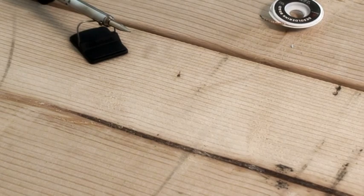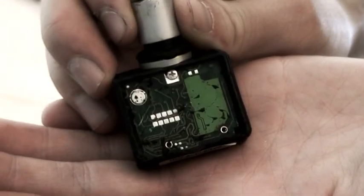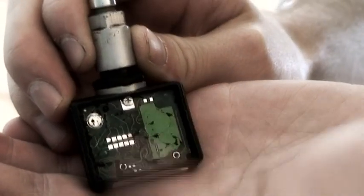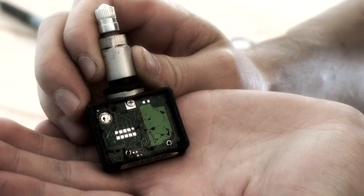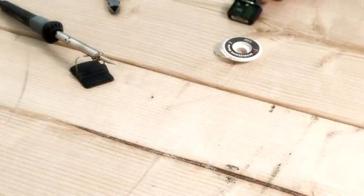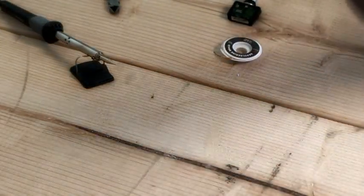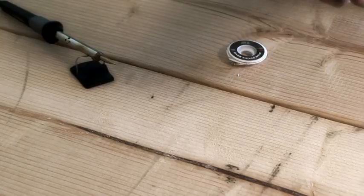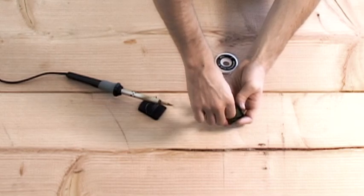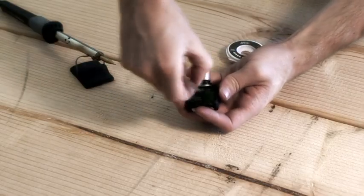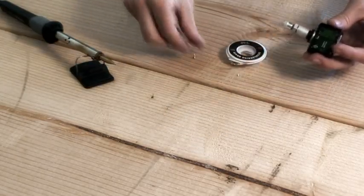So we have desoldered the battery leads and mounting screw from the back side of the circuit board. Now we need to remove the mounting screw. Okay so the screw is coming out. Now we've got the screw removed.